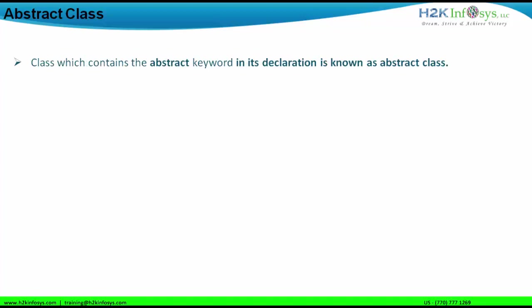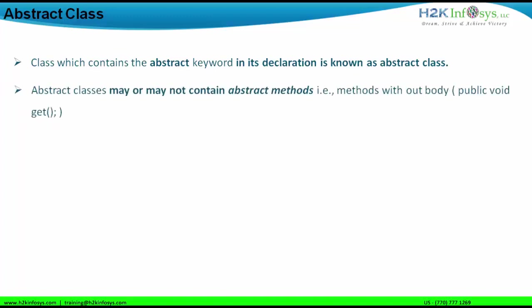Let us find out certain details about abstract classes. A class which contains the keyword 'abstract' in its declaration is known as an abstract class. Before you declare the name of the class, you have to declare the keyword 'abstract'. Abstract classes may or may not have abstract methods. Abstract methods are methods or functions without a body — they actually end with a terminator sign.